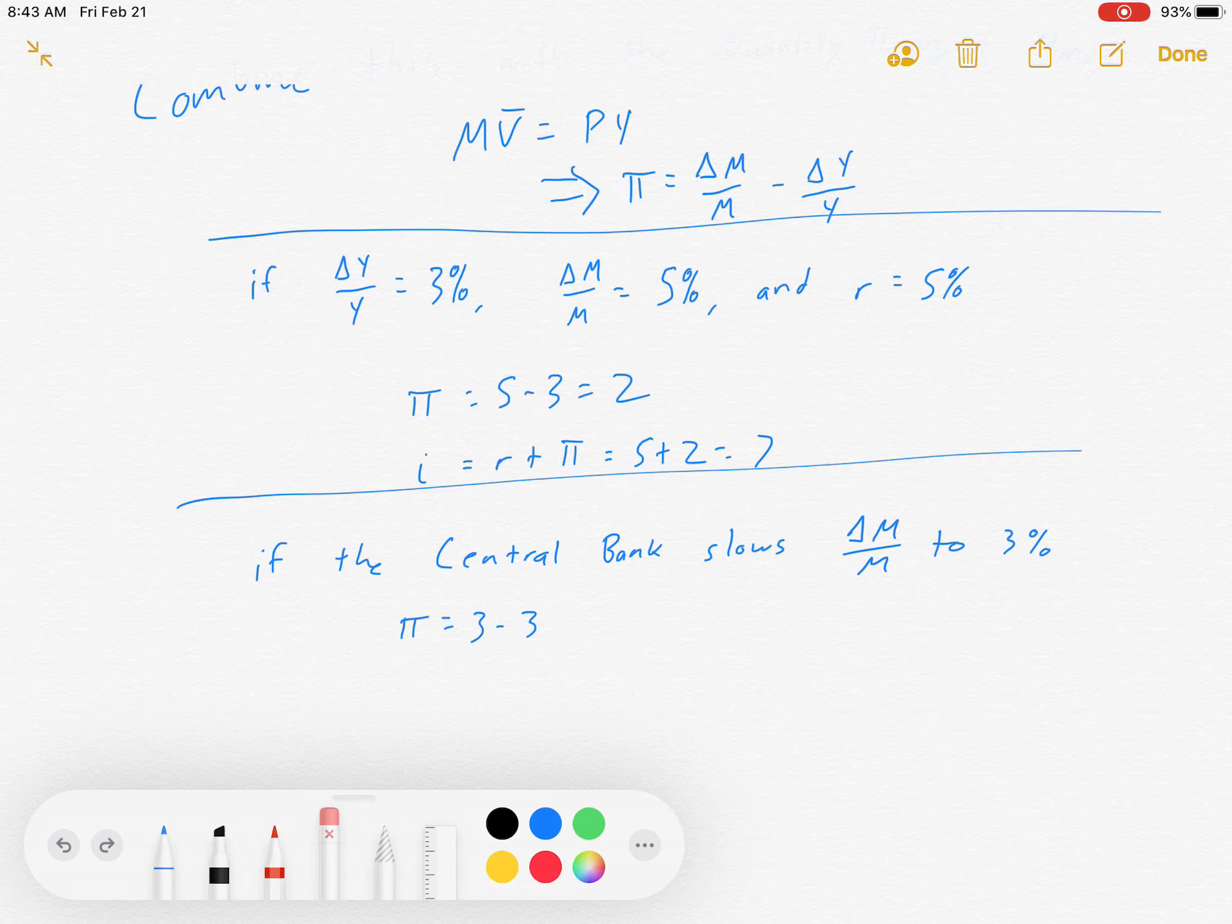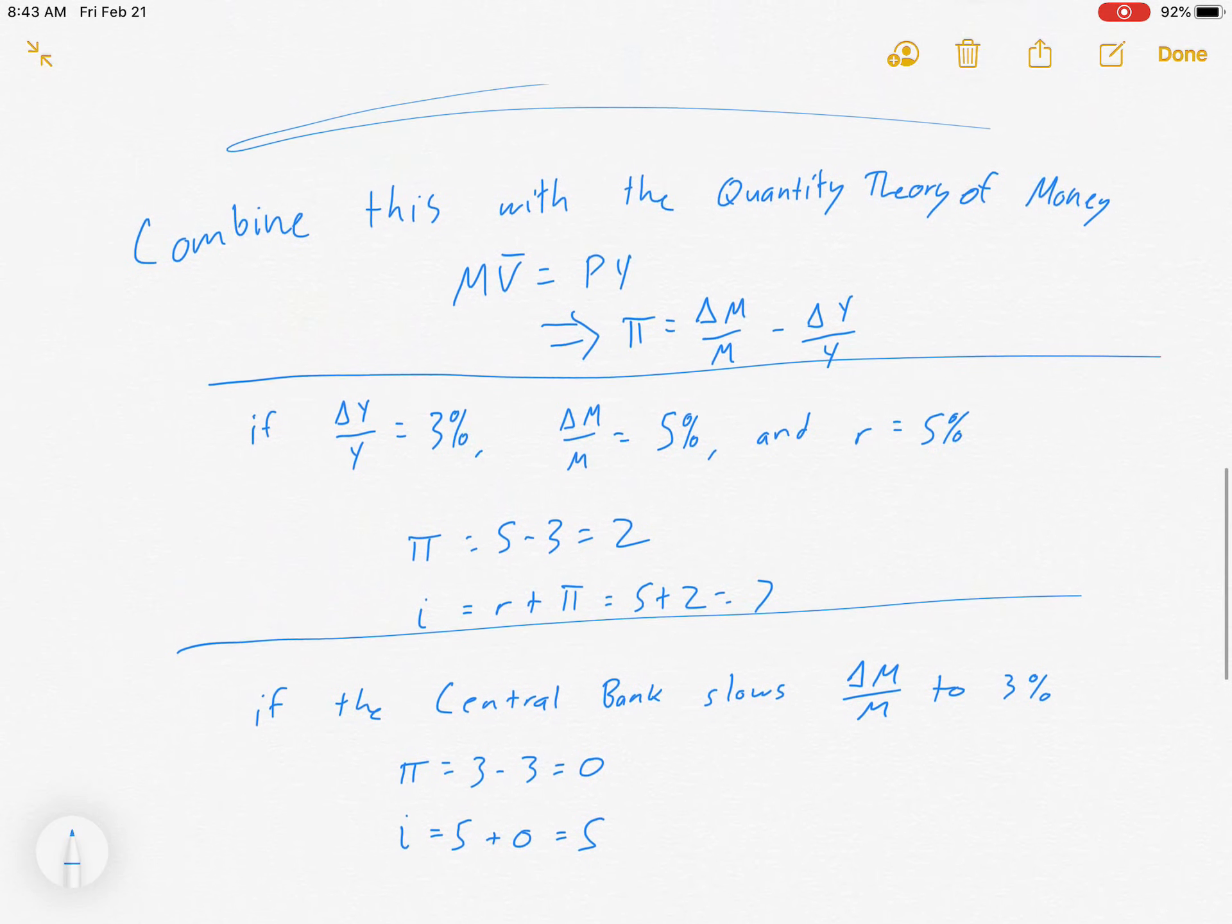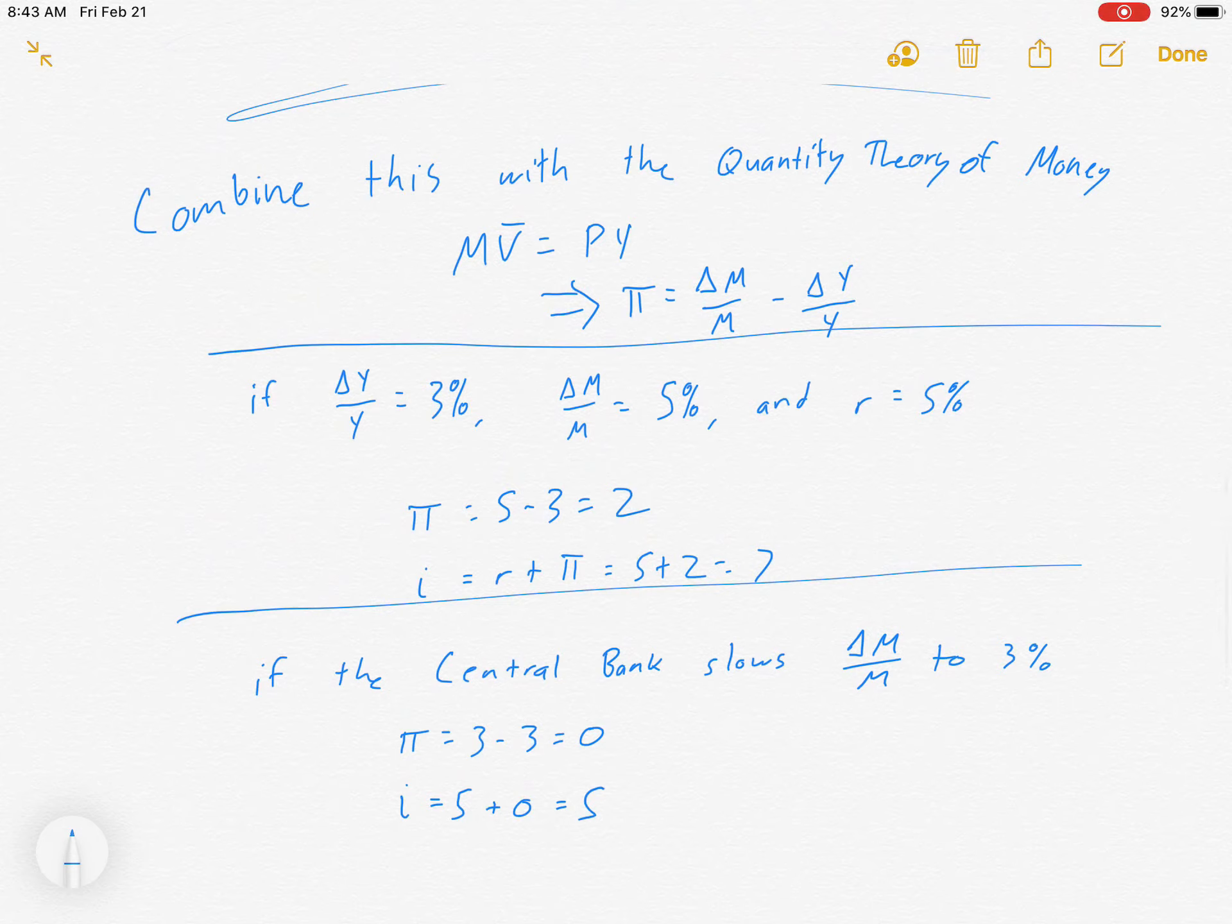Well, inflation would fall to 3 minus 3, the growth rate of money minus the growth rate of GDP, which is 0. So i would then be 5 plus 0 equals 5%.